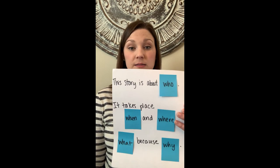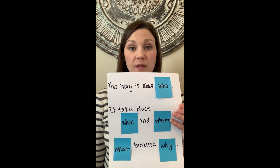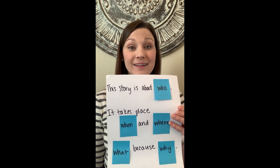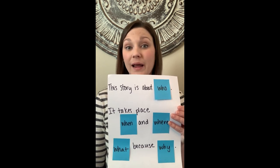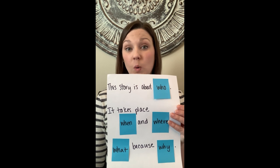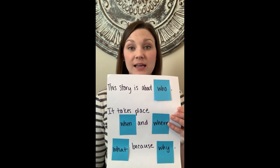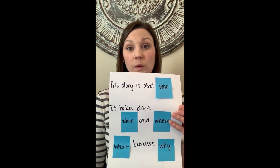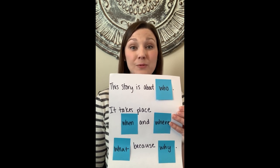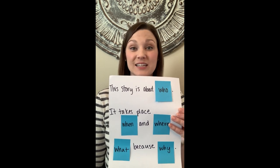The next step is to have your kids summarize the story using the five W questions. They will put their answers to the five W's in sentence form, and it might look something like this: 'The story is about who. It takes place when and where. What, because why.' So for each of these sticky notes, instead of saying who, when, where, what, why, they would give the answer that they discussed earlier.